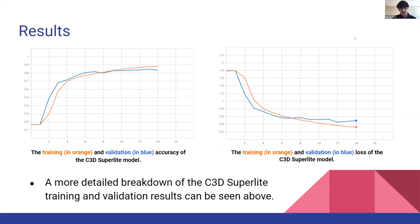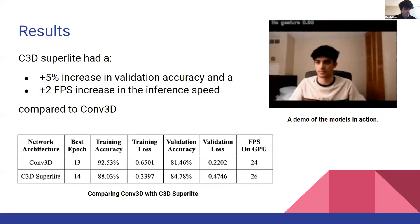C3D Superlight actually performed quite well compared to the first architecture. These are the training results — both the training and validation accuracy as well as the training and validation loss. The accuracy was quite high, and around epoch 8 it started overfitting a bit, but we let it run till epoch 14 and got some pretty good and consistent results that when applied in the real world still made sense.